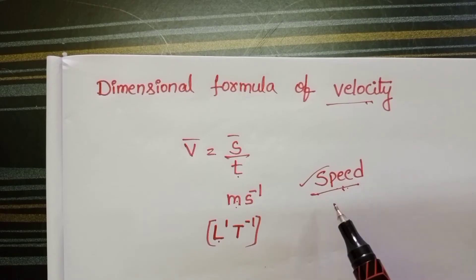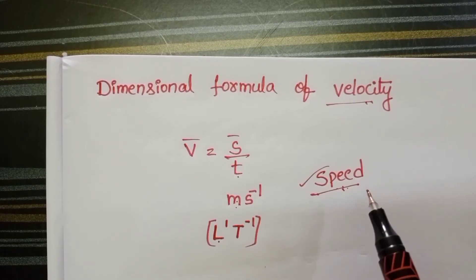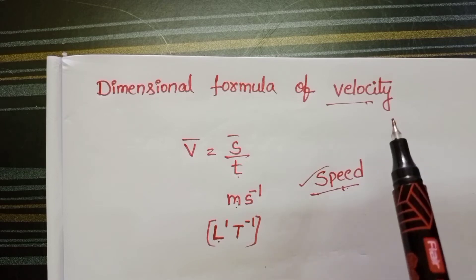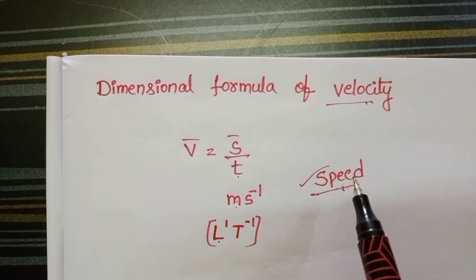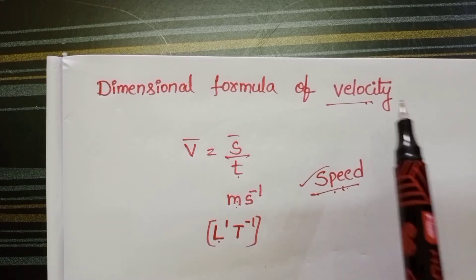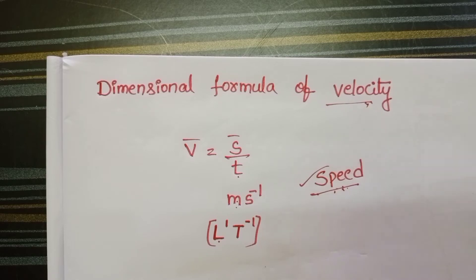Speed also has the same dimensional formula. Because both speed and velocity have the same units and dimensions — the only difference is that speed is a scalar quantity, while velocity is a vector quantity.